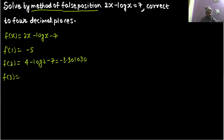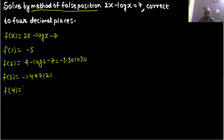f(3) = 6 minus log 3 minus 7, giving minus 1.477121. f(4): keep doing this until you get a positive value. That will be 8 minus log 4 minus 7, and finally I got a positive value: 0.397940.